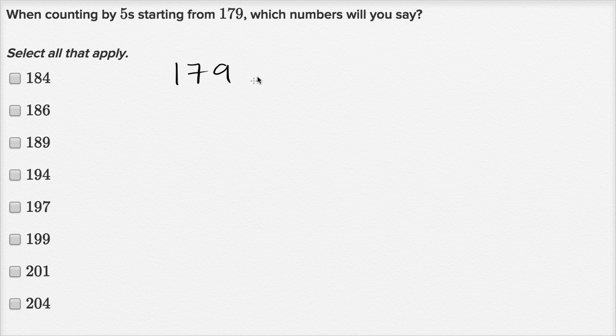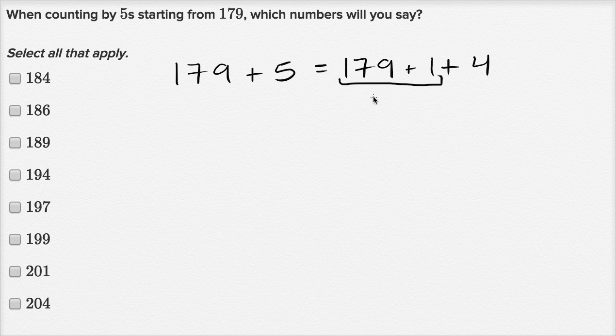So 179 plus 5 is equal to what? Well 179, one way I think about it, 179 plus 5 is the same thing as 179 plus 1 plus 4. And I added 1 just so I get to 180. So this part right here is equal to 180. So it's going to be the same thing as 180 plus 4. So it's equal to 184.